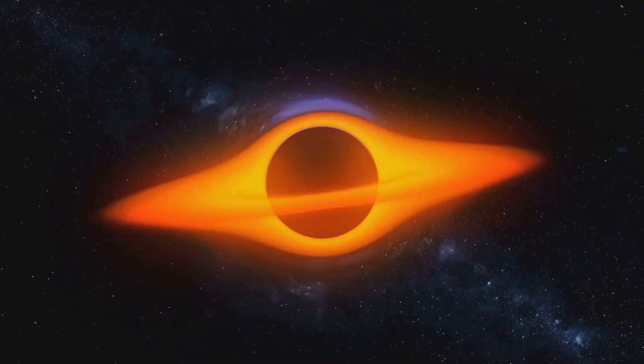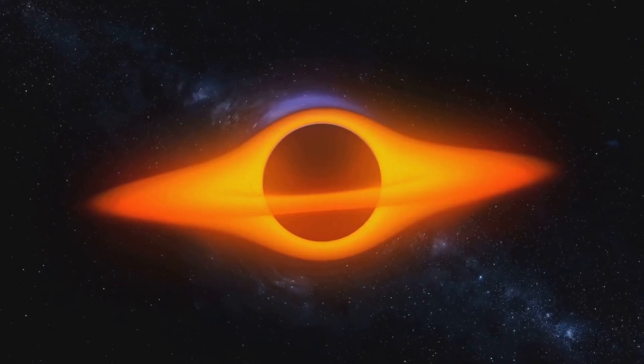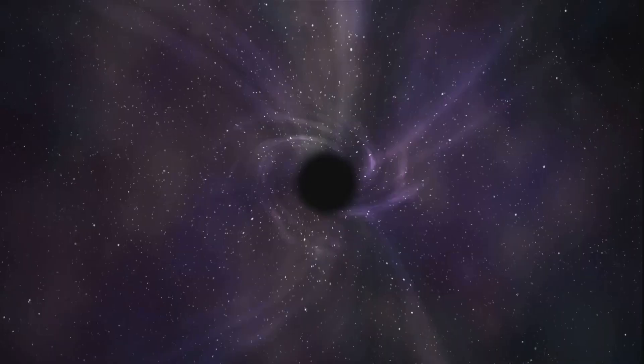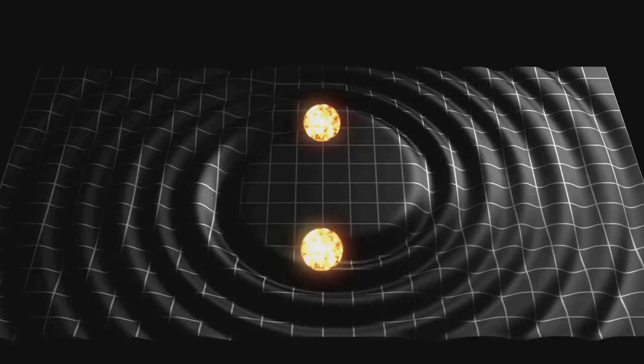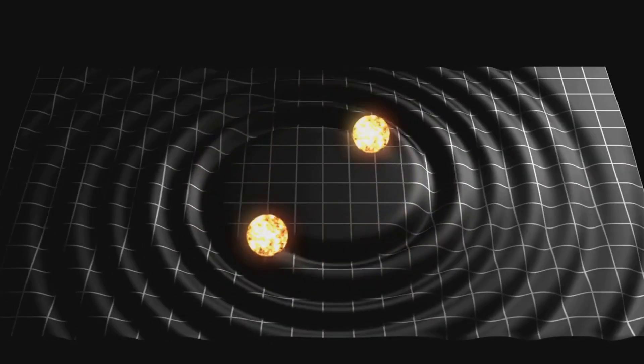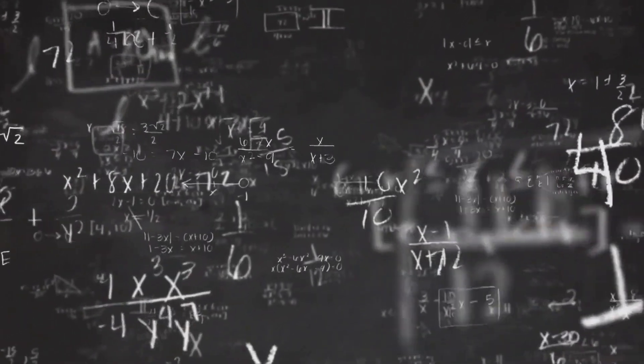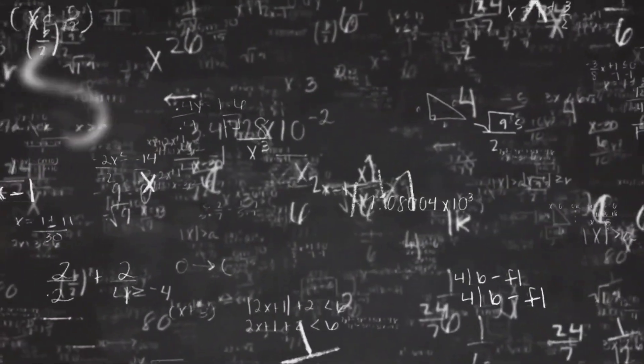For instance, Einstein's theory predicted that black holes should exist and outlined what they should look like. But by the time we discovered the first one, Einstein had already died, and we only took the first ever photo of a black hole five years ago. So yes, this is a theory with tremendous predictive power. But here's the thing: its equations predict that there's an infinitely small point with an enormous mass right at the center of every black hole.